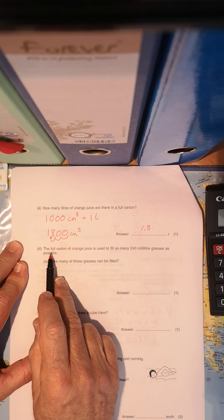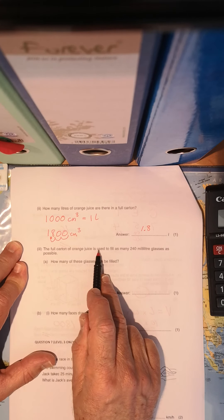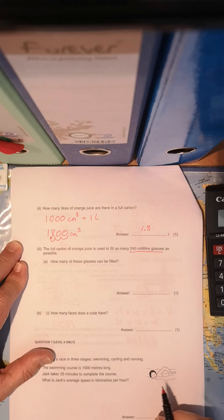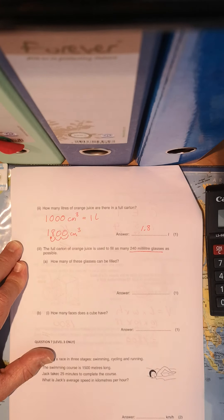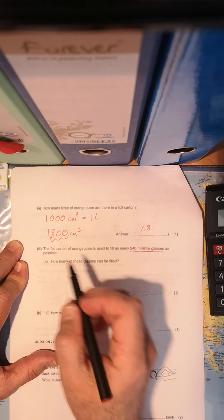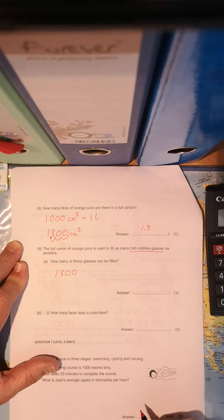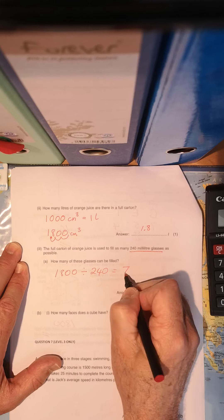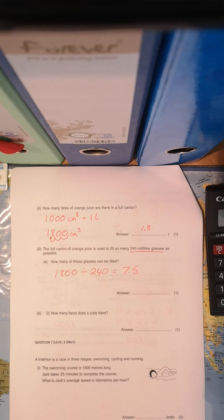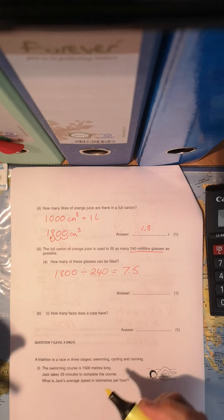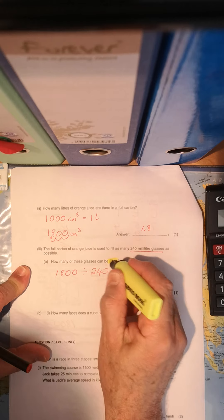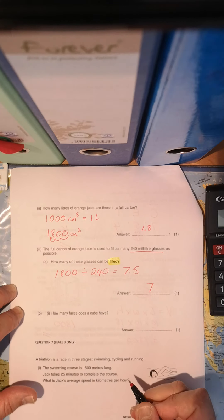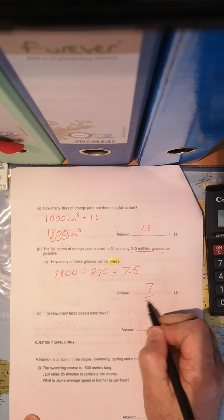Now, next part of the question, the full carton of orange juice is used to fill as many 240 milliliter glasses as possible. The full carton, how many of those glasses can I fill? 240 milliliters. So again, 1,800. And we're going to divide that by 240. And with your calculator, your answer is 7.5. But 7.5 is not my answer. Why is it not my answer? Because they want to know how many of these glasses can be filled. Look at the keyword, filled. So only how many? Seven with remainder. So only seven can be filled.